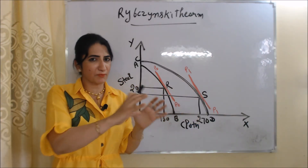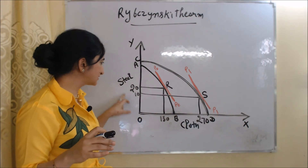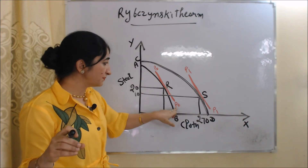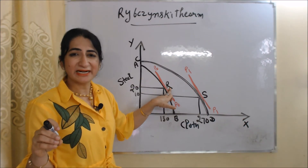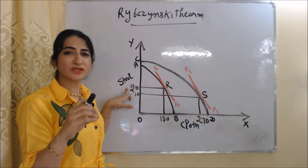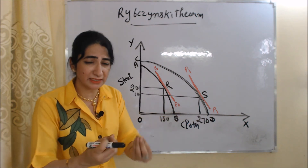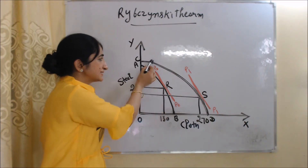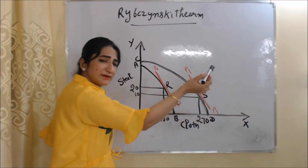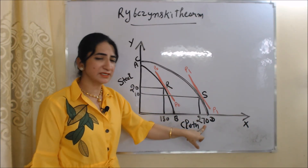Now we will understand this theorem with the help of one more diagram. On the x-axis we have cloth, which is a labor-intensive good, and on the y-axis we have steel, a capital-intensive good. AB is our initial production possibility curve, P0 is the initial price line, and R is the initial equilibrium — at which we are producing 130 units of cloth and 20 units of steel. Now suppose supply of capital is constant and only labor supply increases. As labor supply increases, our production possibility curve shifts from AB to CD. CD is the new production possibility curve, P1 is the new price line, and S is the new equilibrium — at which we are producing 270 units of cloth and 10 units of steel.